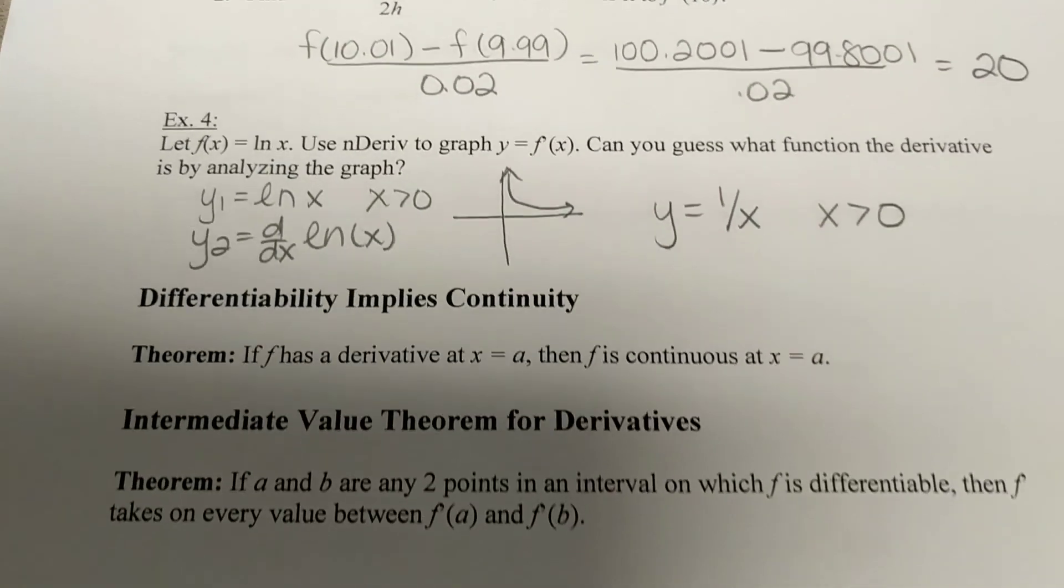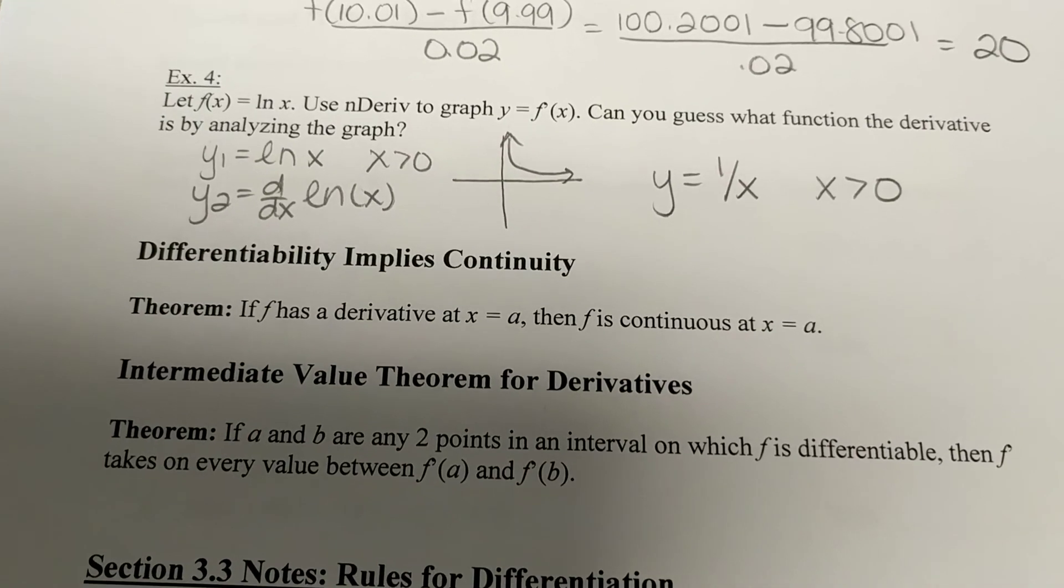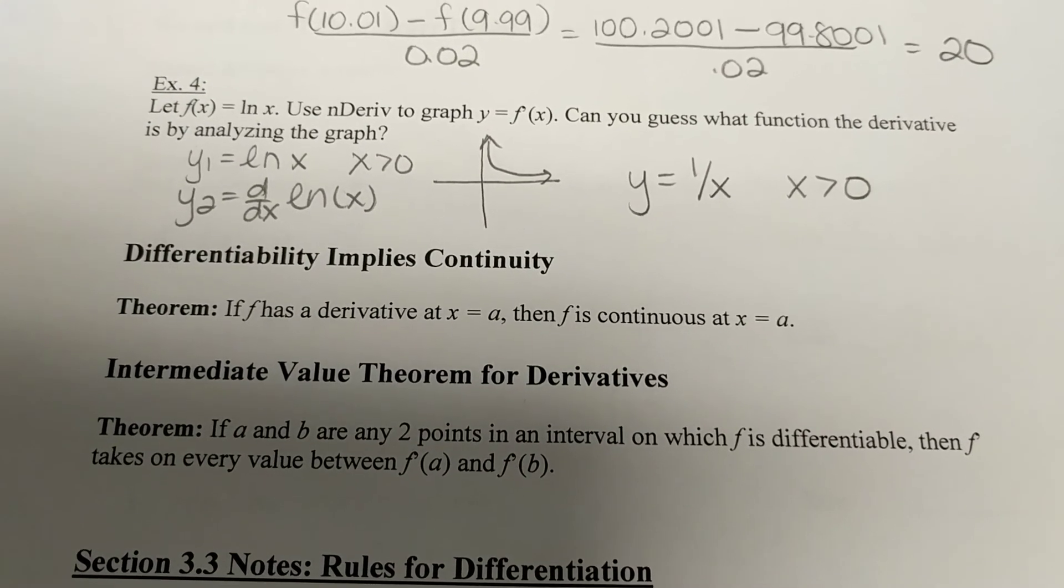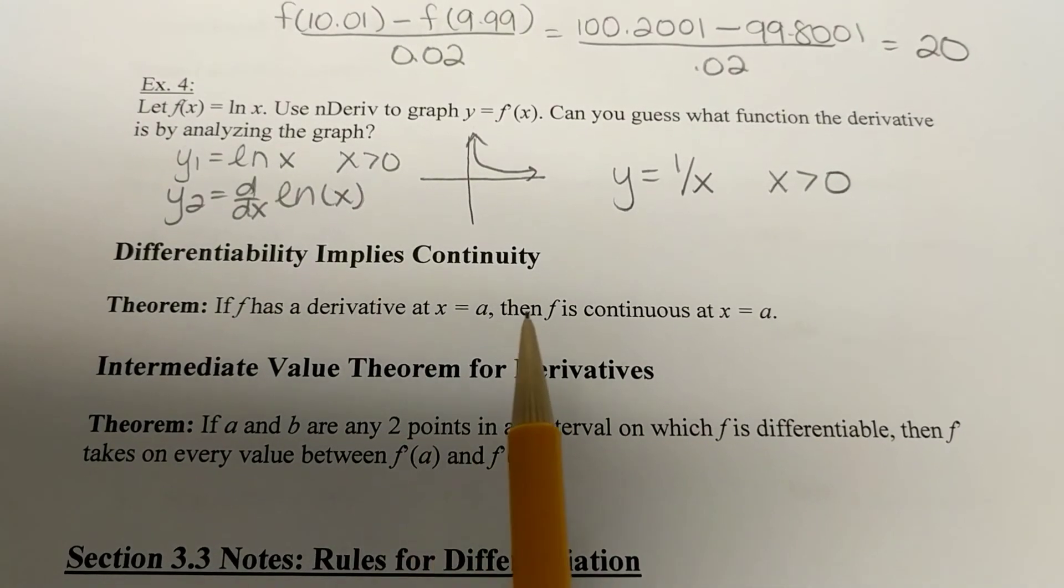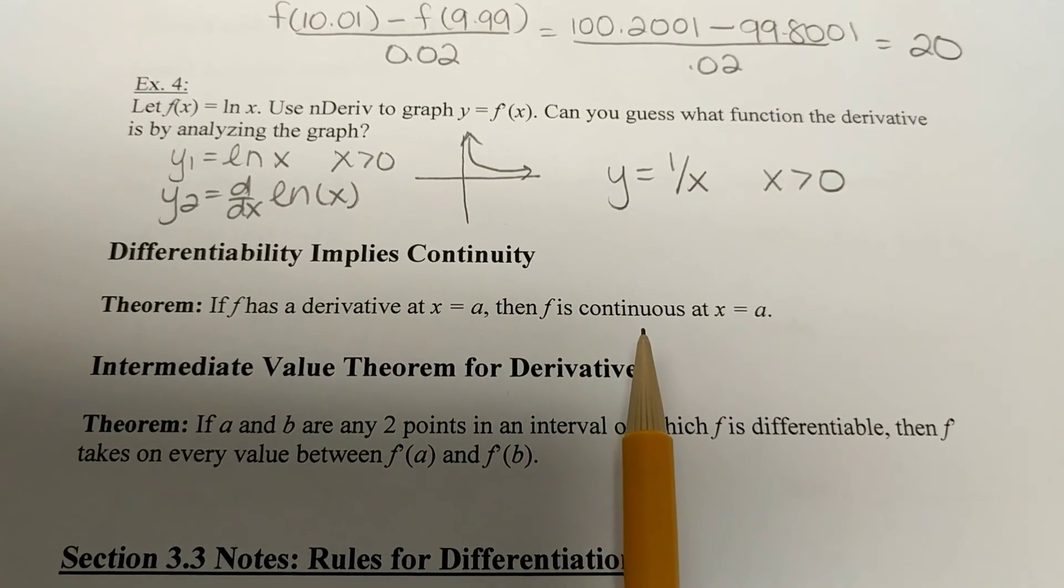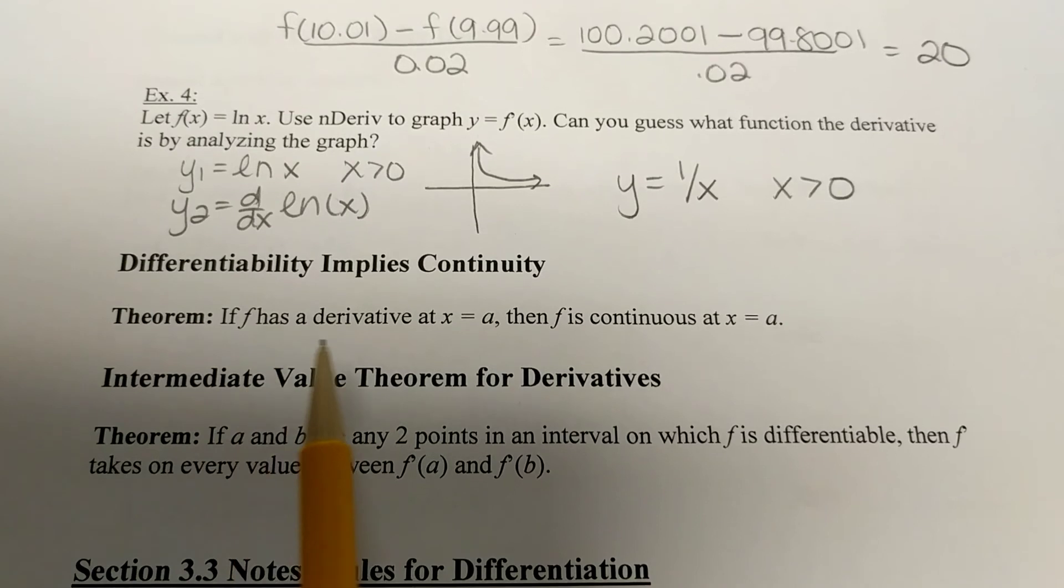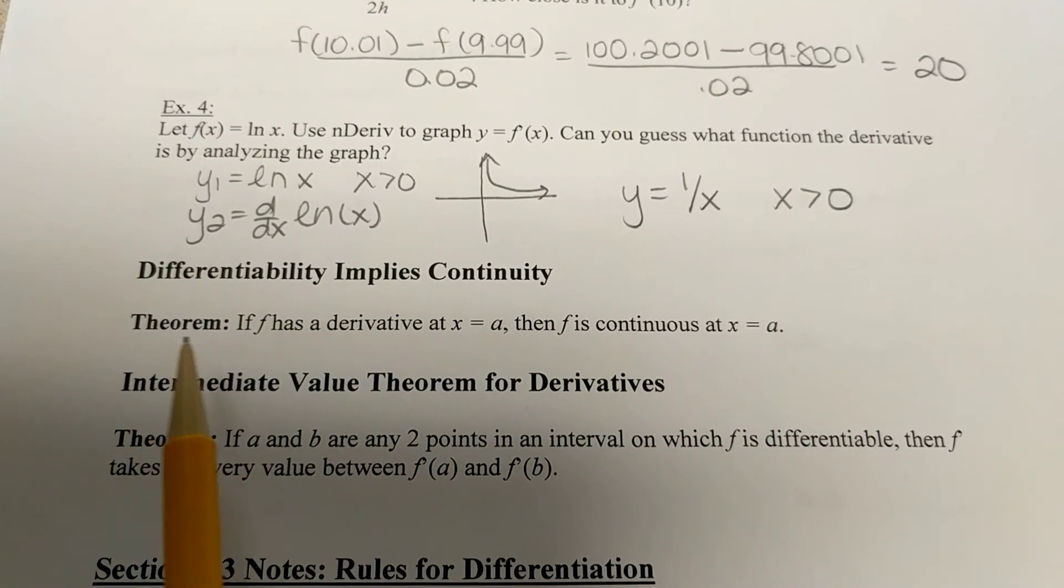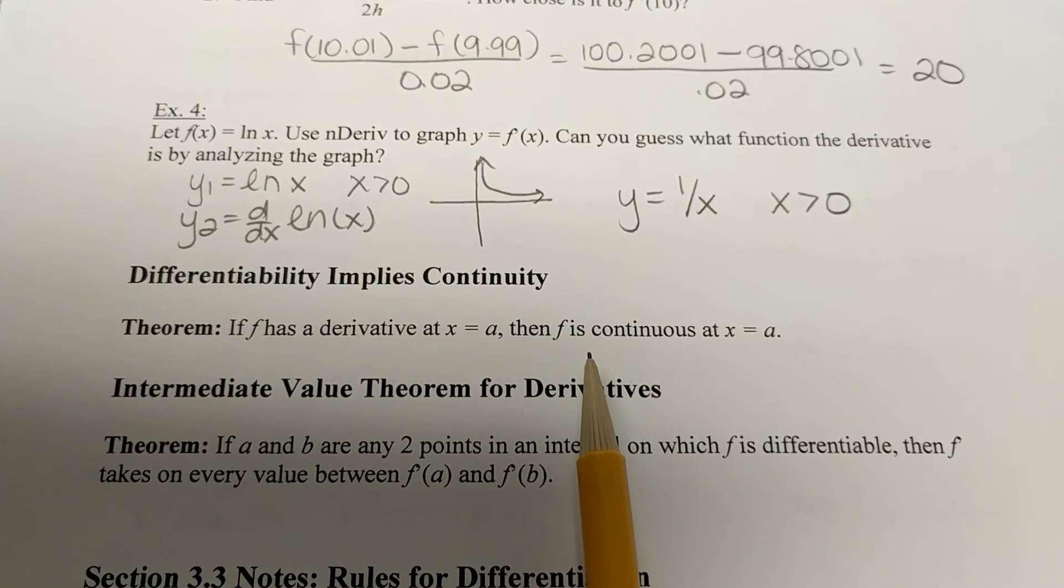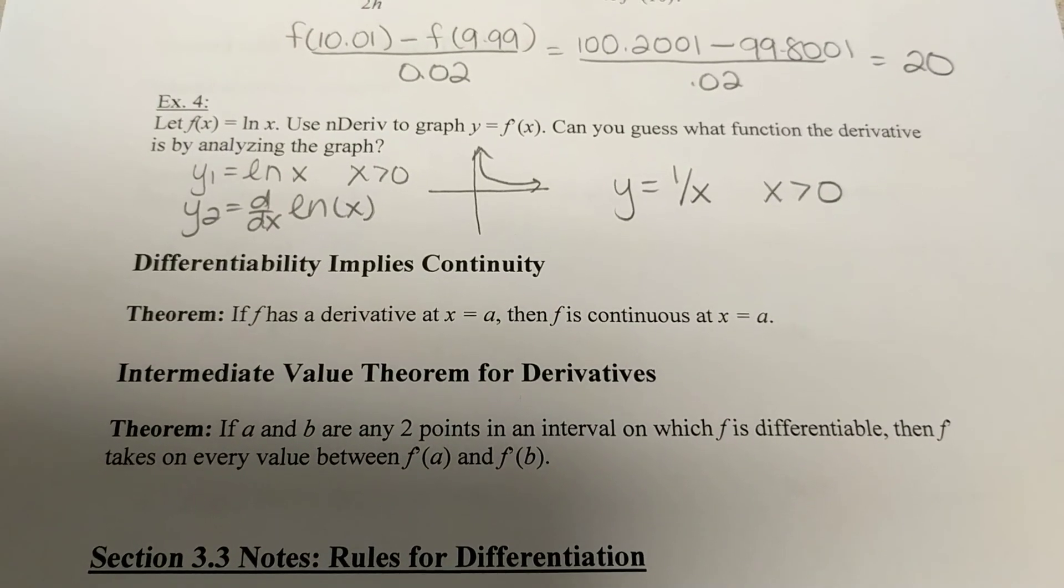So, the last two definitions, I want you to make sure you read through those as well. If it has a derivative, then f is continuous. That is the biggest definition in this section. I want you to highlight that one. Put glitter, smiley faces, and stars. That's an important one.